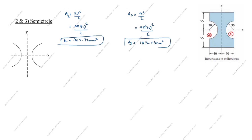The centroid of a semicircle from its flat edge is given by 4r/3π. This applies to both C2 and C3. We now calculate x2 and x3 — the x-coordinates of the centroids of each semicircle.